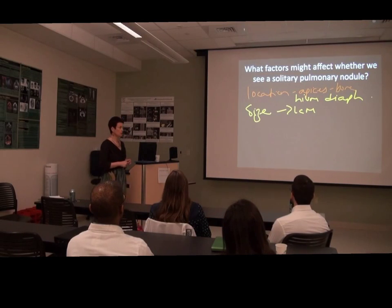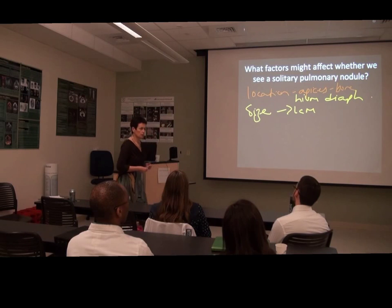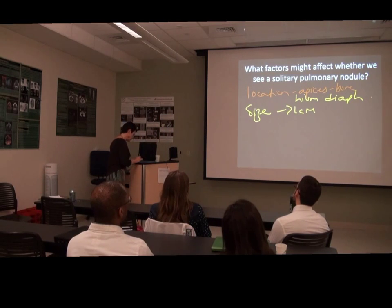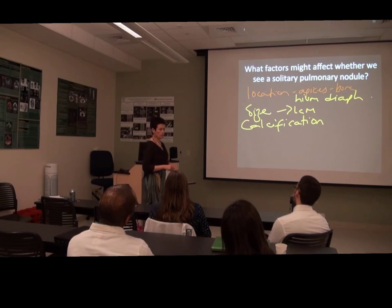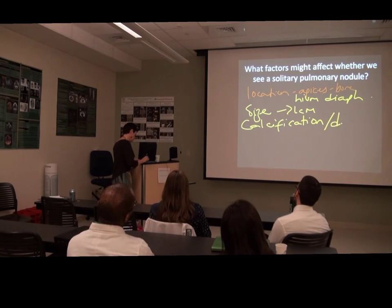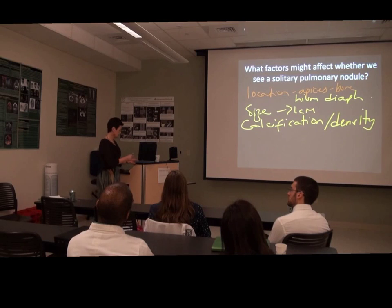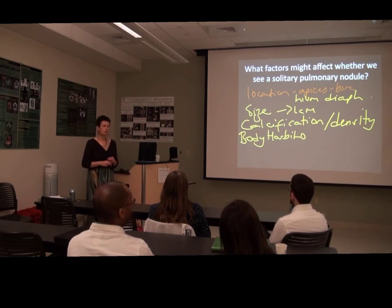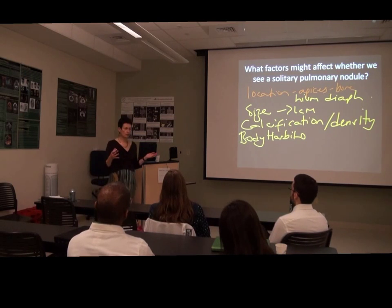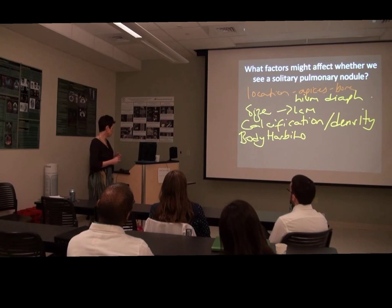Apart from some of these other factors, what else might affect it? The calcification — so the presence of calcification is going to affect its radiographic property. More calcification makes it denser, so how dense the nodule is matters. What about obesity? The patient's body habitus will absolutely affect it. What about other pathology obscuring it? If you've got a big area of pneumonia, you could have a significant mass there, or pleural effusions, or other pathology.